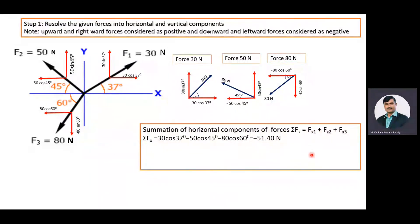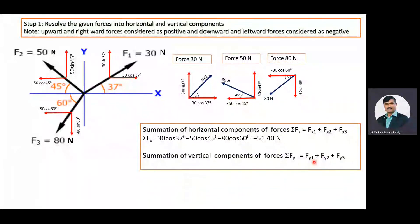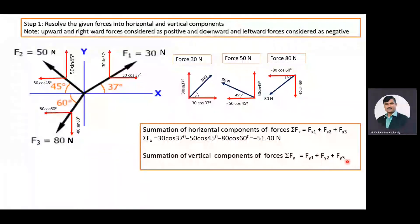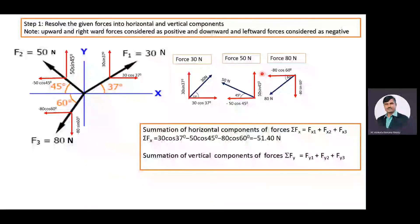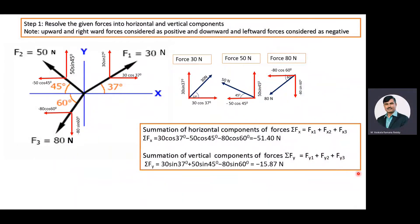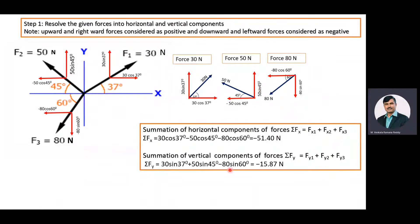Then we will move towards finding the summation of vertical components of forces. Sigma Fy is equal to Fy1 plus Fy2 plus Fy3 — that is, the first, second, and third force vertical components respectively. Fy1 is equal to 30 sin 37 degrees, Fy2 is equal to 50 sin 45 degrees, and Fy3 is equal to minus 80 sin 60 degrees. After simplifying, we get sigma Fy equal to minus 15.87 Newton. With this, we have completed step one.